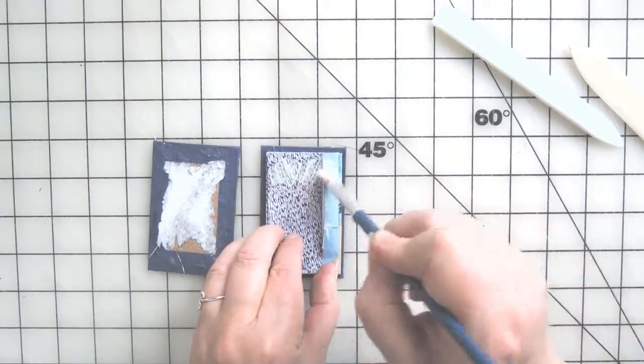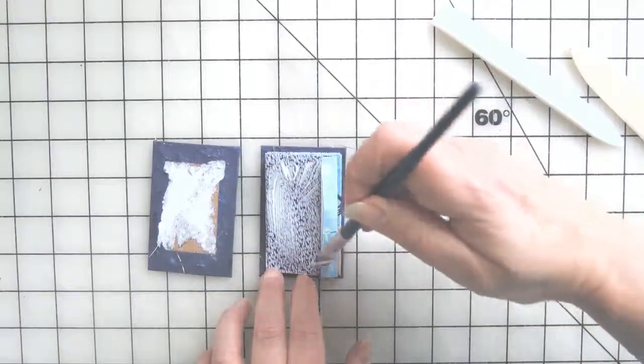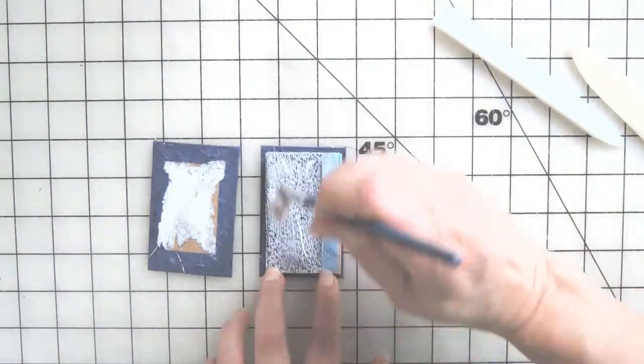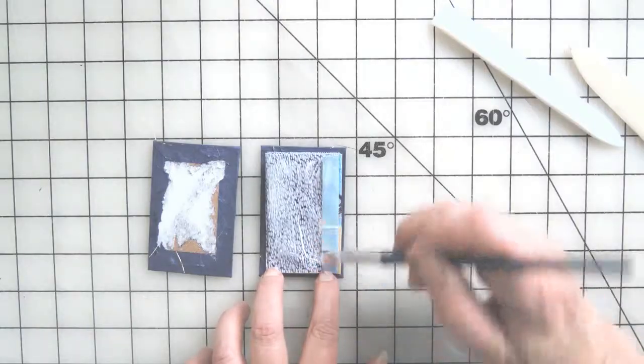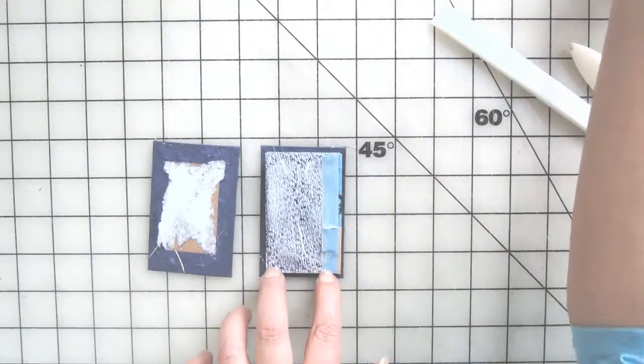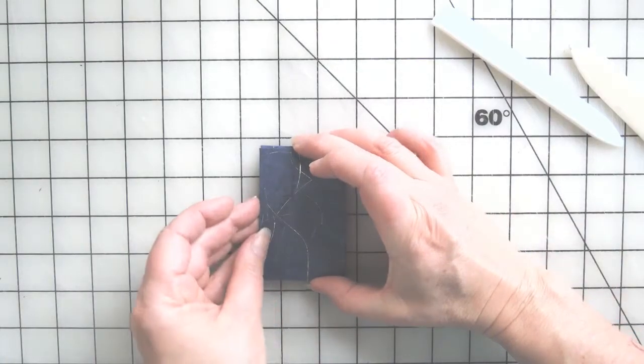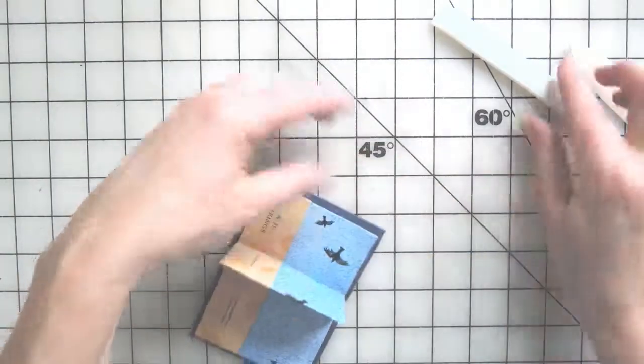Apply glue to the whole thing, go out to the edge, and then we can put the other cover on top. Place it, line it up, open it out, and burnish.